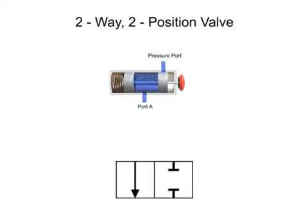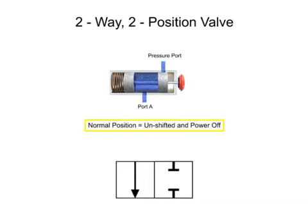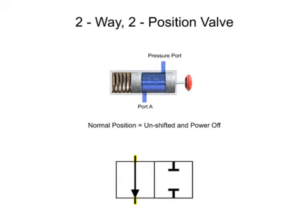Lines are drawn to indicate the normal position of the valve. The normal position is defined as the position of the valve when its spool is unshifted and the power is off. This means that any mechanical actuators, such as springs, are in their non-actuated positions, and electrical actuators, such as solenoids, are powered off. The normal position can also be referred to as the unshifted, de-energized, or unactuated position. In this case, position one is the normal position, so the lines indicating the normal position are drawn in the first box.